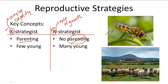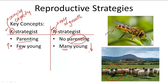K-strategists produce a few large young, whereas R-strategists produce many small young. Because K-strategists have an intensive parenting style, they can afford to produce few young because their young all have a high survival rate. But R-strategists give no parenting, so their young generally have a much lower survival rate — they have to produce many young to compensate for this low survival.